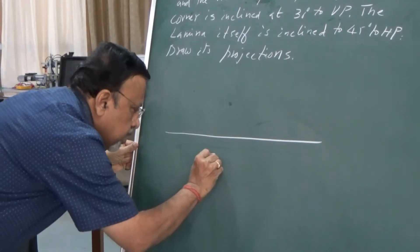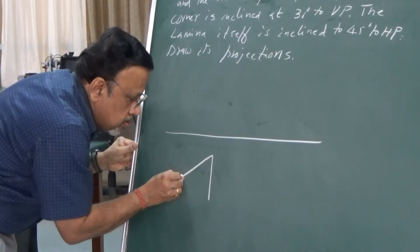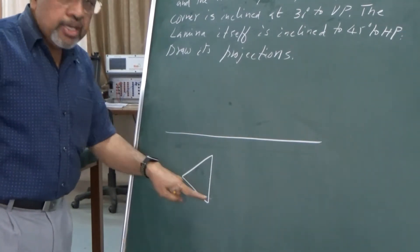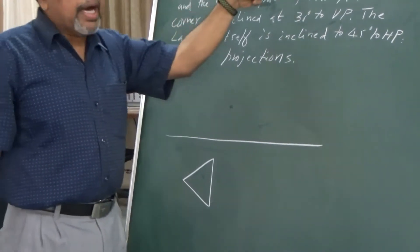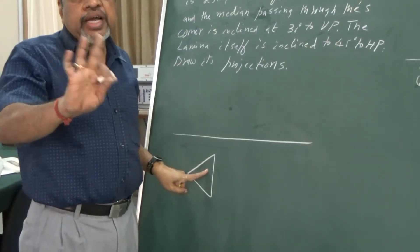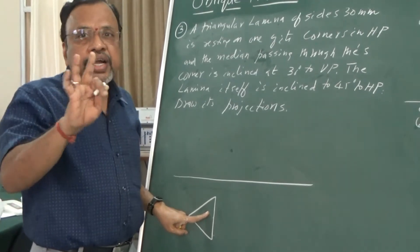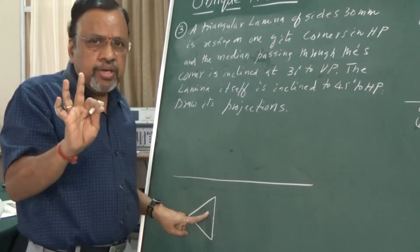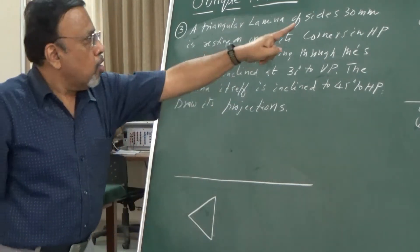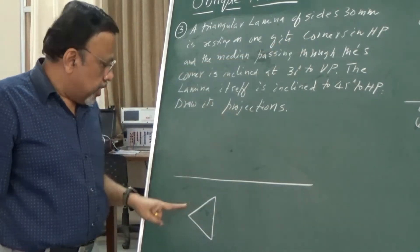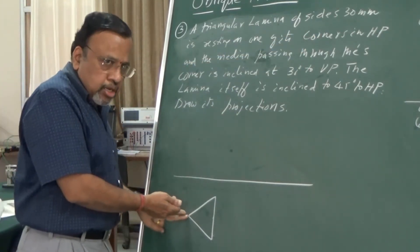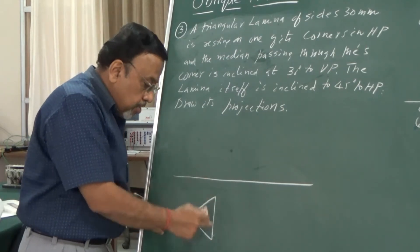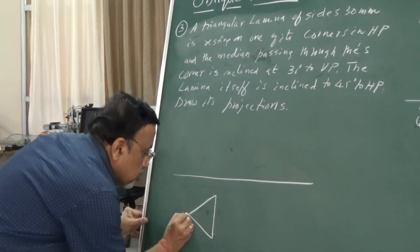Draw the lamina. Since I want a corner to make equal inclinations, and whenever we say triangular lamina it has to be an equilateral triangle — not isosceles or right-angled — I draw an equilateral triangle of side 30mm. Since I want a corner in HP, the side opposite to that corner has to be vertical. So start with this orientation.